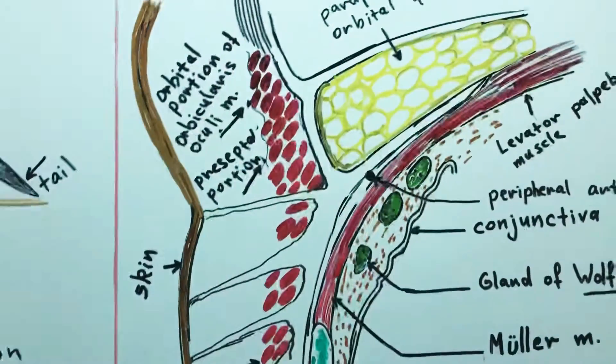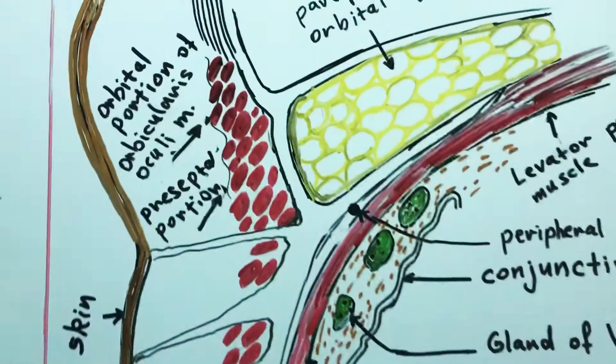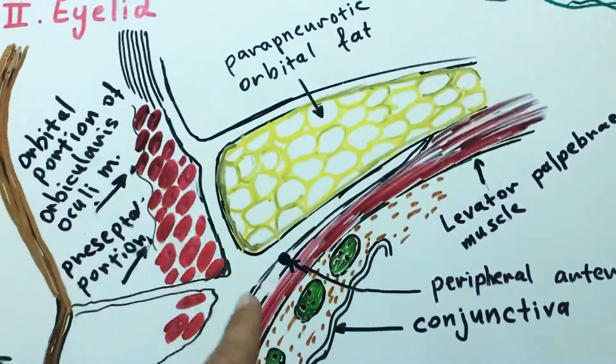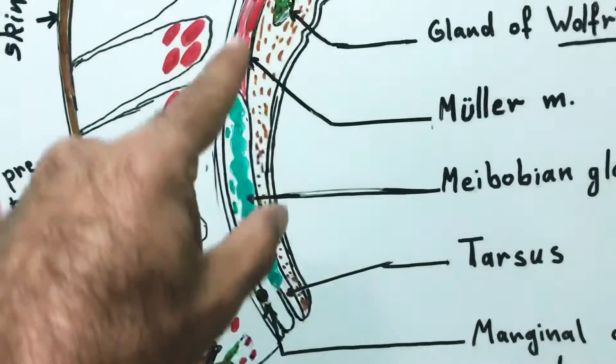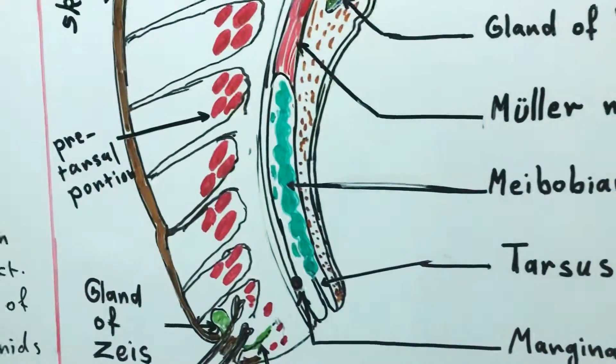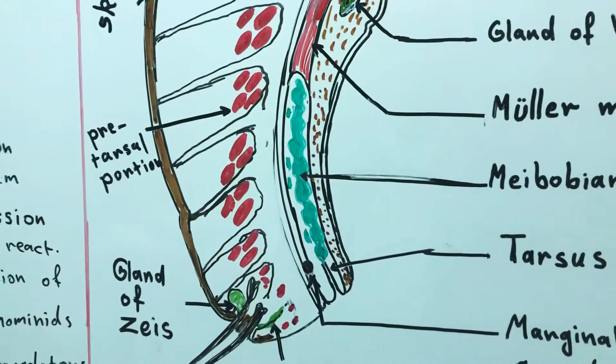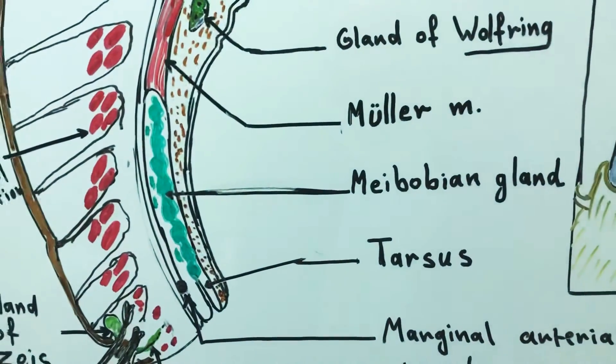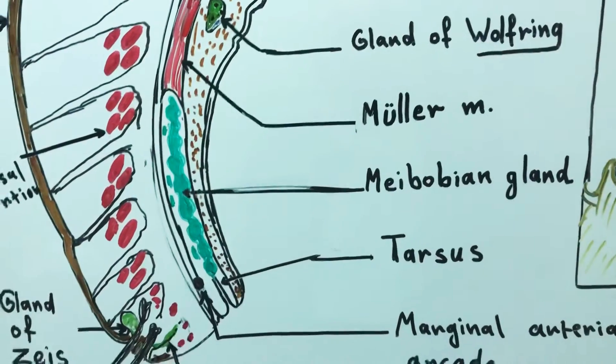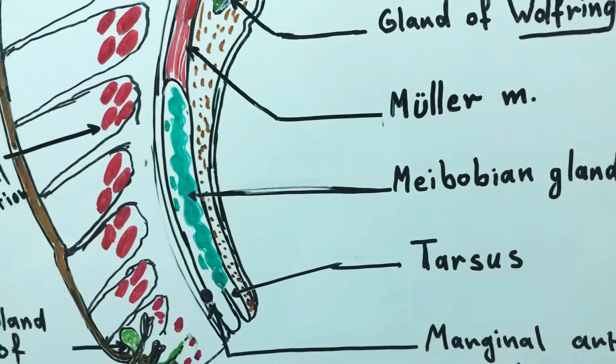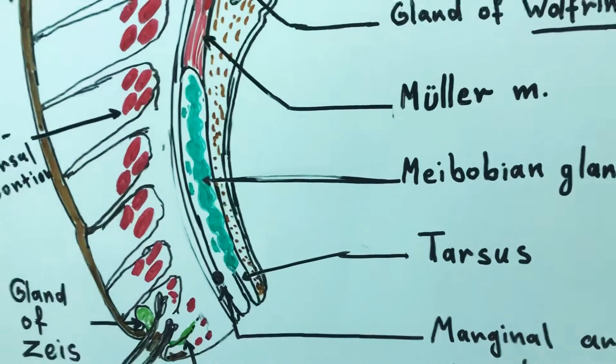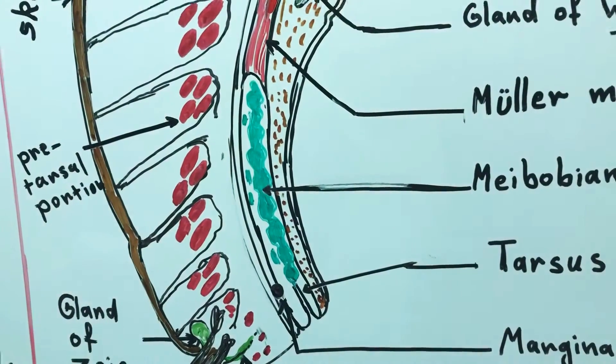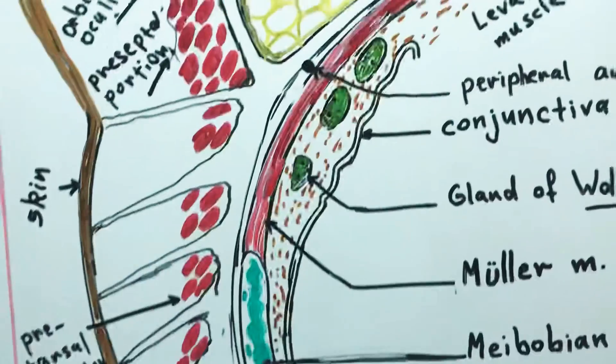The fourth layer of the eyelid is the fibrous layer which involves the orbital fibrous septum and the tarsus. The tarsus is composed of dense connective tissue that gives the eyelid its shape. It also involves modified sebaceous glands that are called Meibomian glands. These glands secrete what is known as meibum which forms the lipid layer of the tear film.